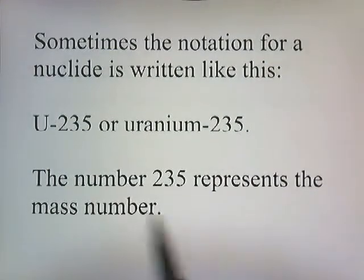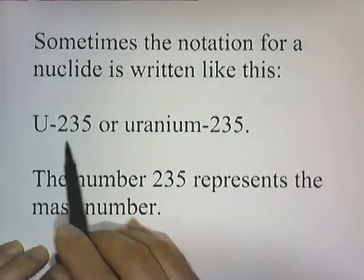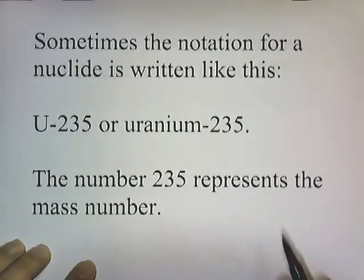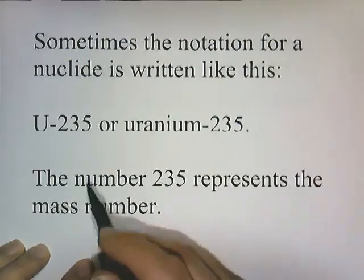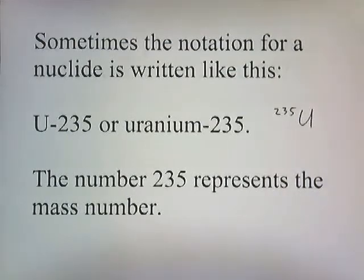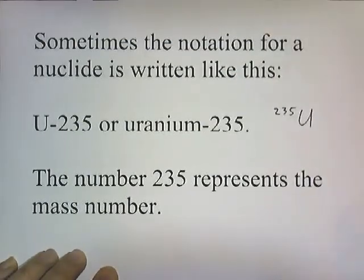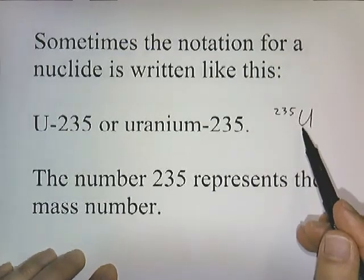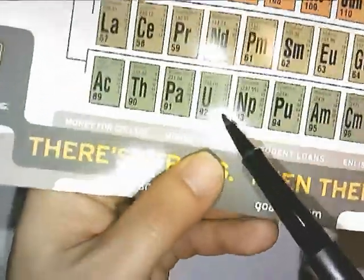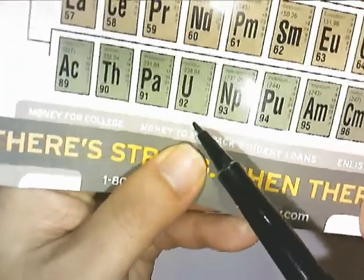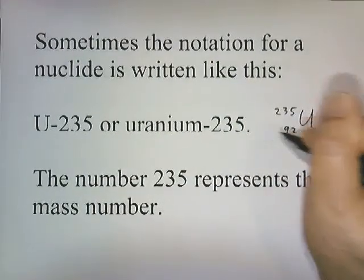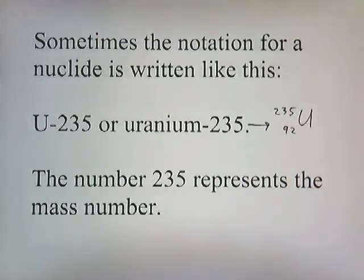Sometimes the notation for a nuclide is written like U-235 or Uranium-235, where the number 235 represents the mass number. To rewrite this in standard notation, you write 235 on top with U, and then look on the periodic chart to find the atomic number of uranium, which is 92.